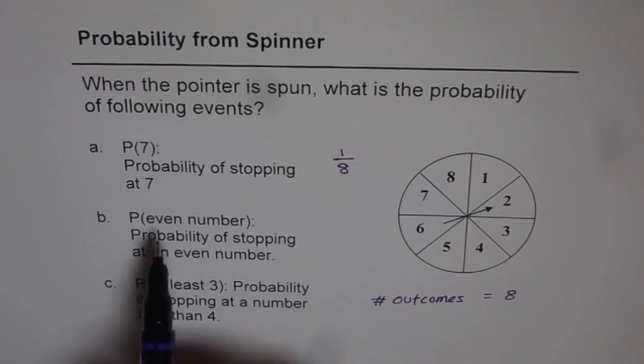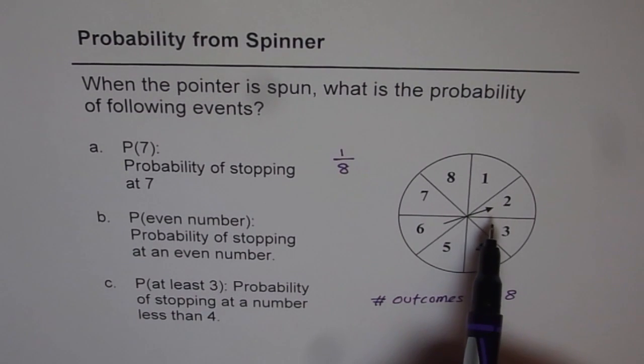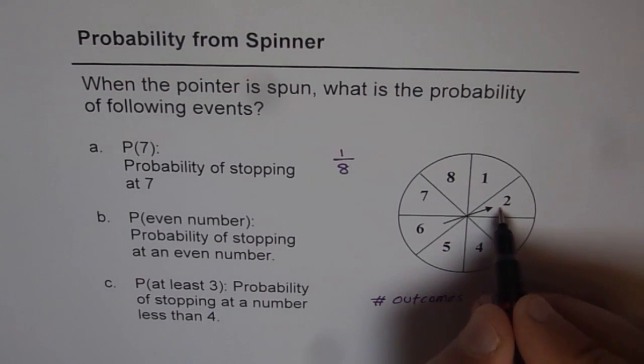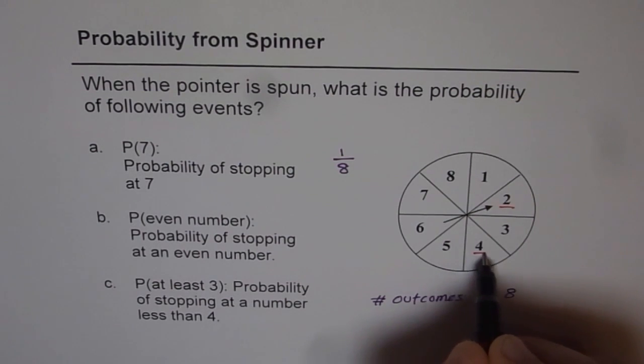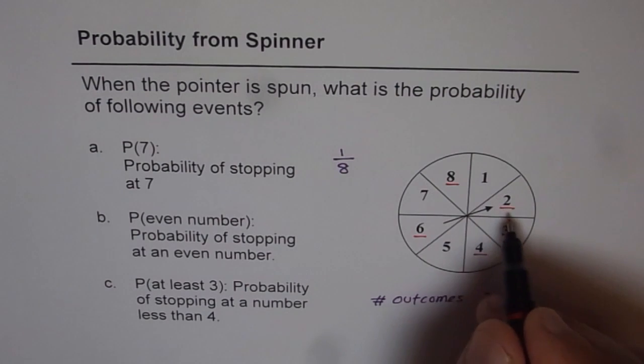The second one is probability of this pointer stopping at an even number. So how many even numbers do we have? As far as the even numbers are concerned: 2, 4, 6, and 8. So there are 4 even numbers.